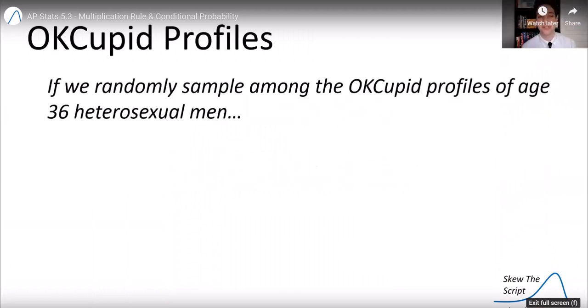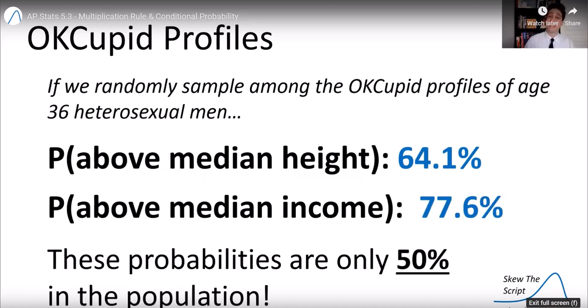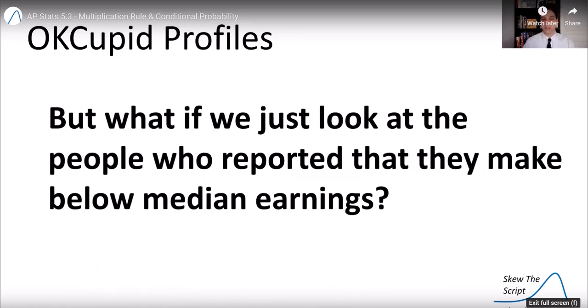So let's get into our discussion for today. If you randomly sampled among the OKCupid profiles of age 36 heterosexual men, we found that 64% chance of getting an above median height person and a 77.6% chance of getting above median height income. And these probabilities will only be 50% of the population. So we raised our eyebrows a bit. There's reason to doubt that these are actually accurate. Maybe some people are lying. But what if we just look at the people who reported they make below median earnings? It seemed like median earnings were the ones that were most inflated. Let's look at the people who actually reported that they earned below median earnings.